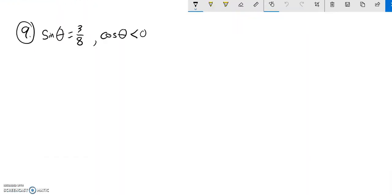This is Math 142, practice test 1, problem number 9. We need to find all six trig functions for theta, where we know sine theta and we know cosine theta is less than 0.